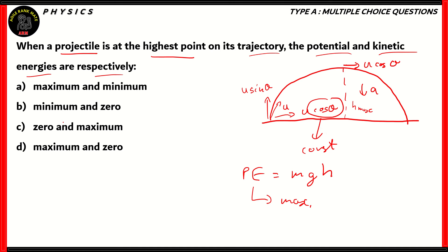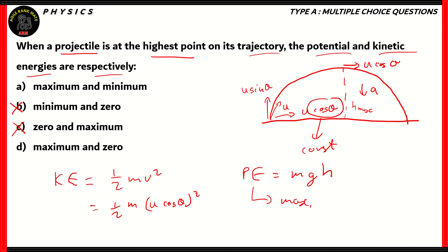So options which do not say the potential energy is maximum would be incorrect, which in this case is options b and c. So we have option d or option a as the possible correct answer. We need to know whether the kinetic energy is minimum or zero. Kinetic energy is calculated as half mv squared, where v is the velocity. In this particular case, the velocity is u cos theta. So the kinetic energy would be half m(u cos theta) squared. Now, u cos theta is constant, and the value of u sine theta is zero, so this is the minimum value for velocity. Since velocity is minimum, the kinetic energy is also minimum. Therefore, the correct option is option a: when a projectile is at the highest point on its trajectory, the potential energy is maximum and the kinetic energy is minimum.